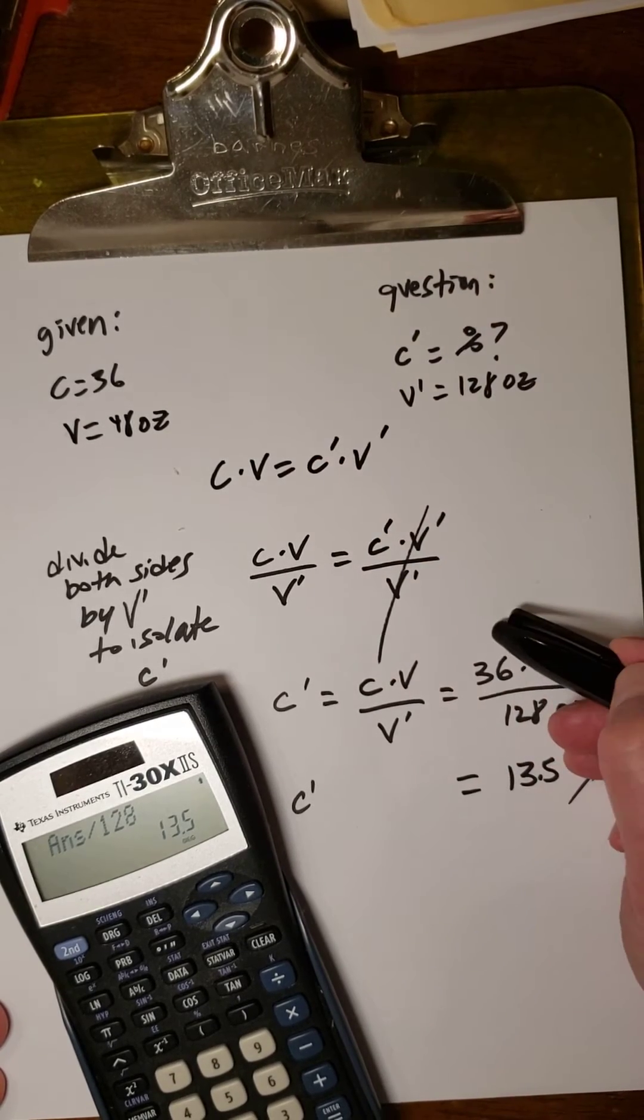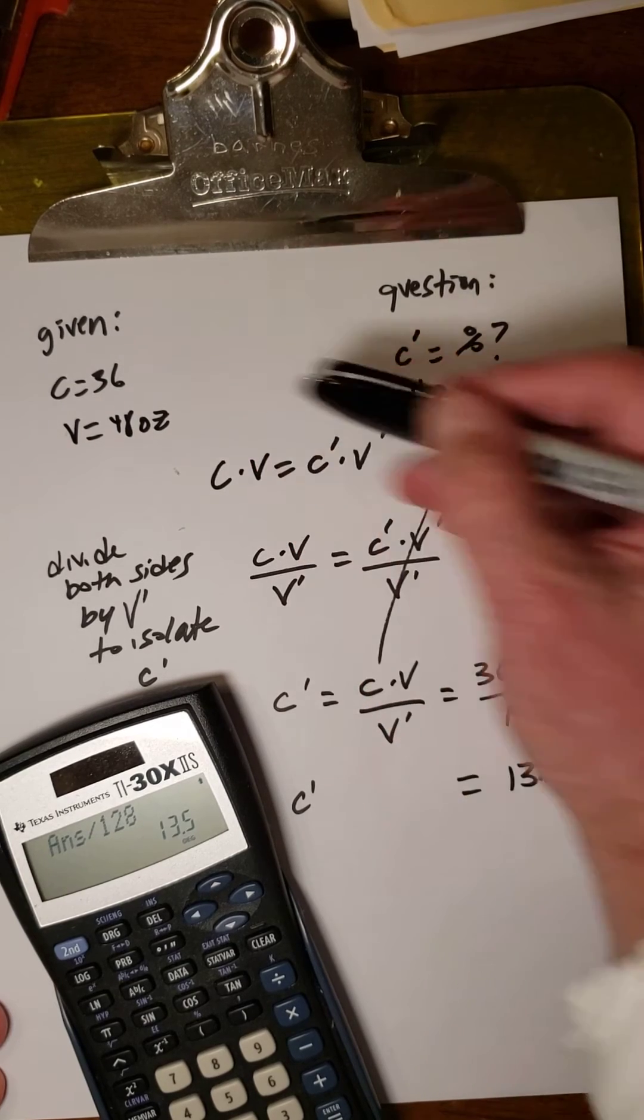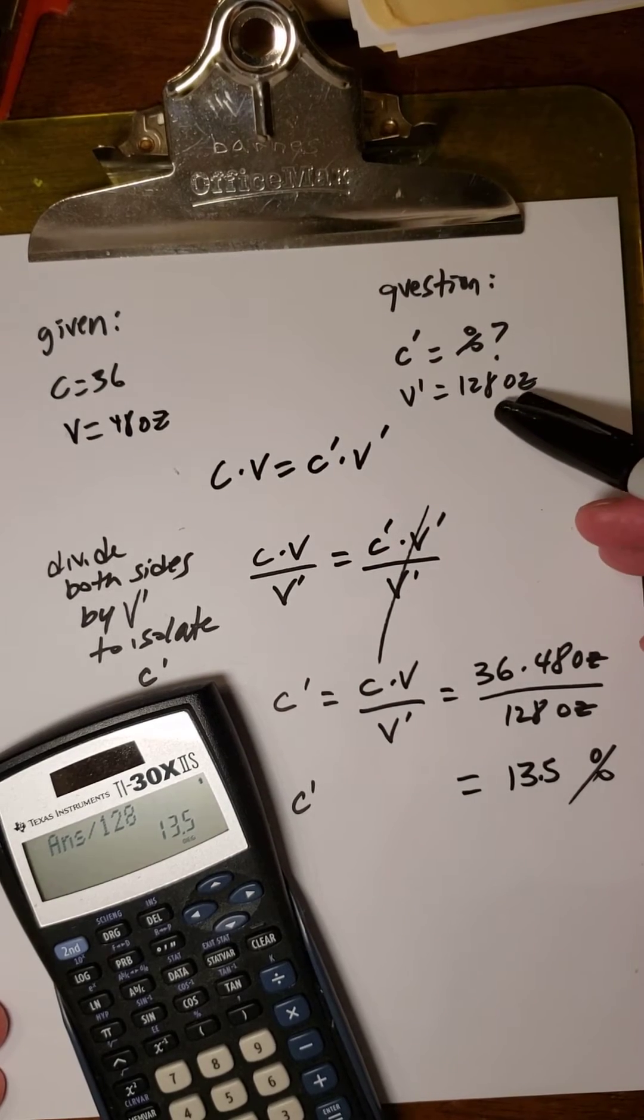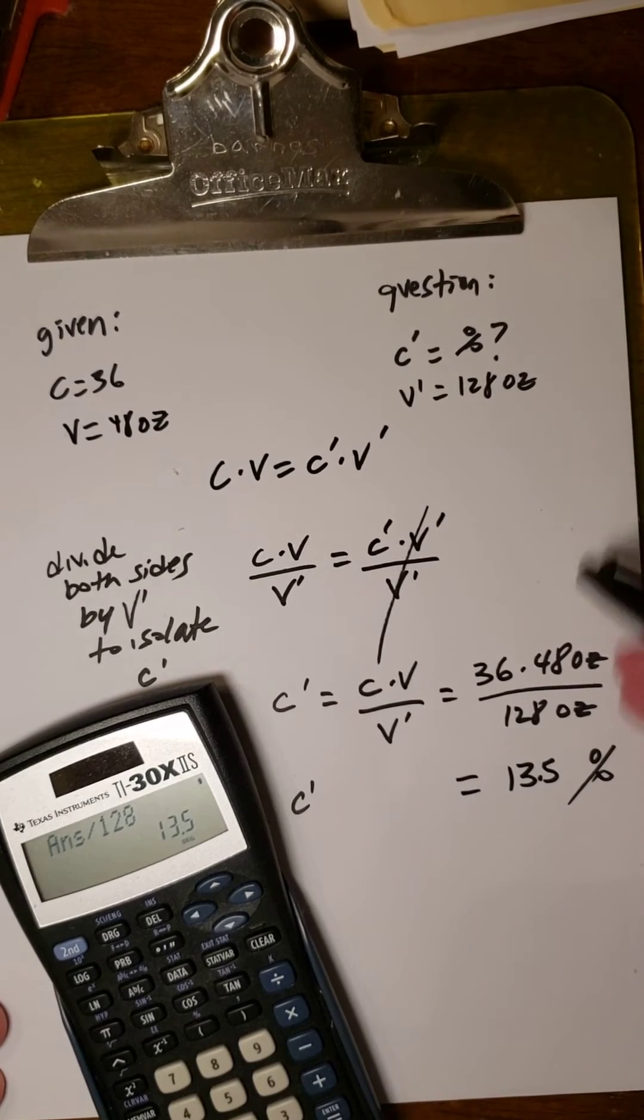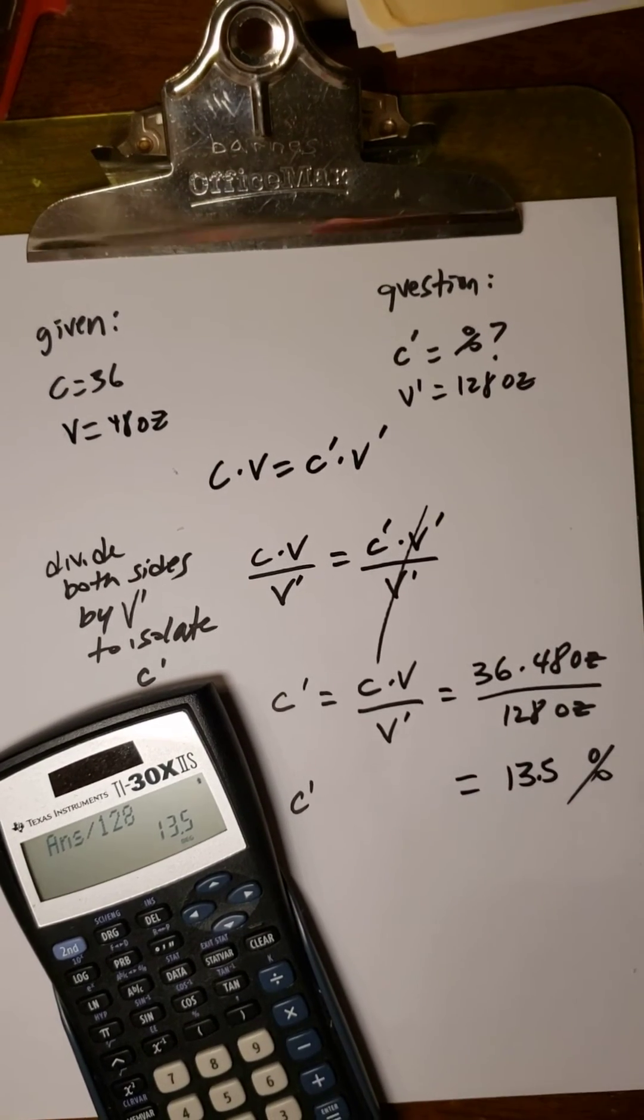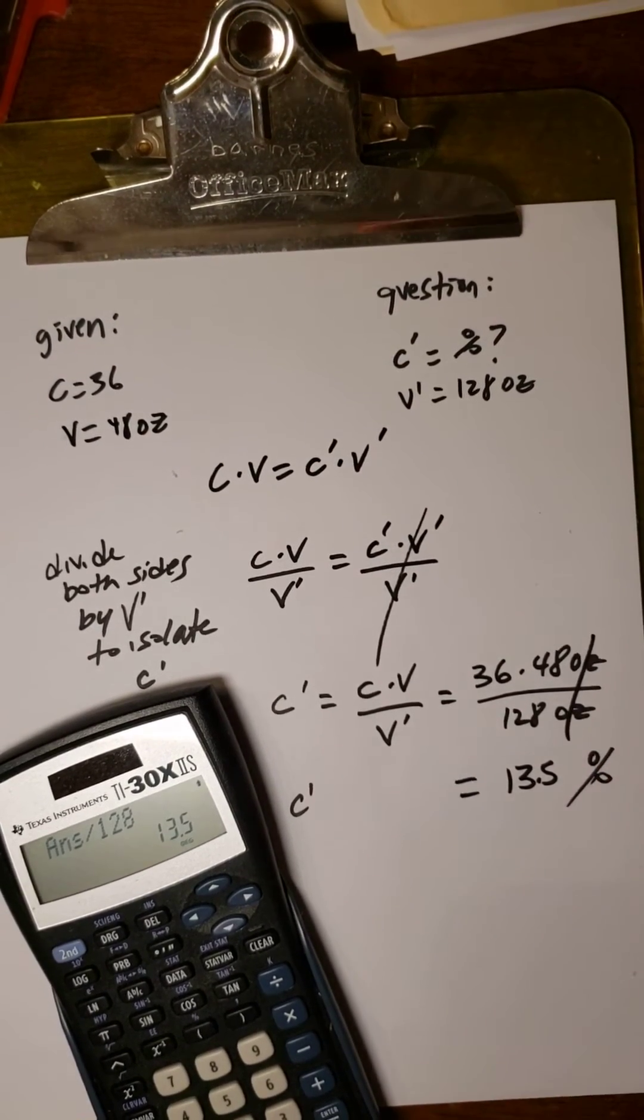The index of 36 multiplied by the volume of 48 divided by the new diluted volume of 128 ounces. Ounces cancel.